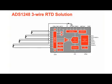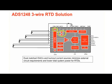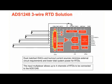For RTDs and thermistors, achieving very high accuracy temperature measurement is simple. Dual matched IDACs provide configurable excitation through an RTD and can be implemented in 2-wire, 3-wire, and 4-wire configurations. For 3-wire configurations, additional IDAC performance enhancements can be realized by alternating the IDAC channels, which effectively cancels out the effects of mismatch and mismatch drift of the IDACs. The input multiplexer allows up to four 3-wire RTD channels to be connected.